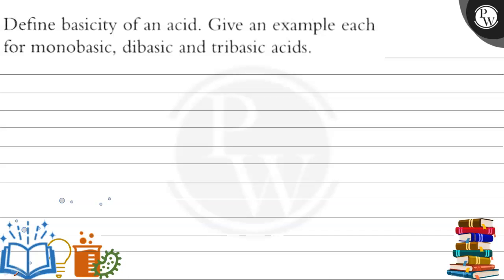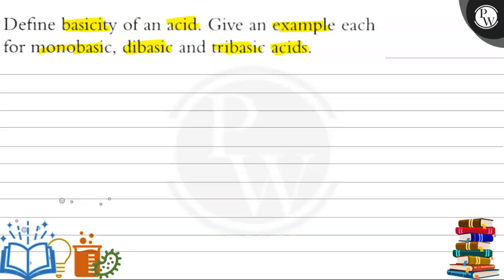Let's read the question. The question says: define basicity of an acid and give an example each for monobasic, dibasic, and tribasic acids. In this question, firstly we have to define basicity of an acid, and after that we have to give one example each for monobasic, dibasic, and tribasic acids.